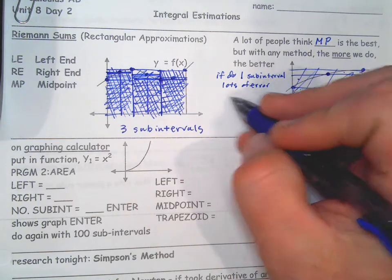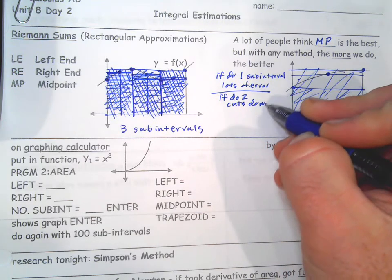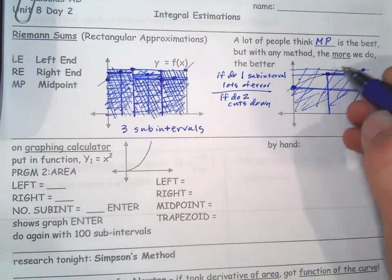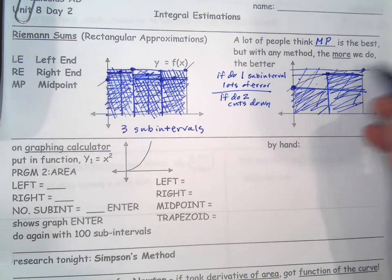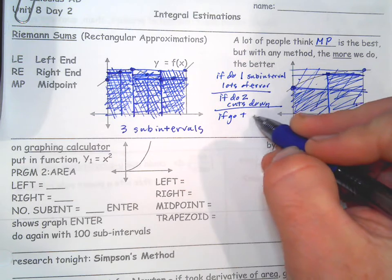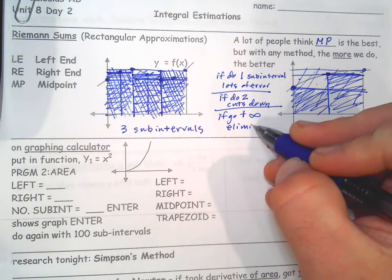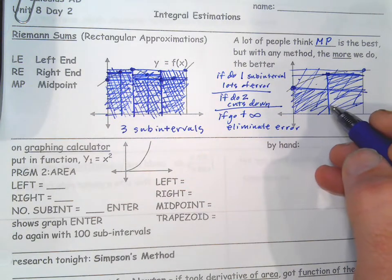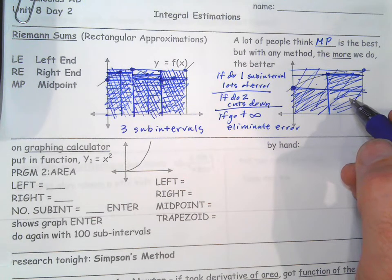Now, if we were to do two slices, it really starts to cut down on the error. So like on the left end here, there's a ton of error. But if we did two slices with left end, all this area you're missing, we kind of get a lot of it. Now we're just missing those two chunks of area. So it's a lot better. Now, if we go to infinite slices, you actually eliminate the error. The error goes to zero. The more slices you do, the smaller the error gets. If you go to infinite slices that are infinitely thin, infinitely many, you actually get the exact answer.